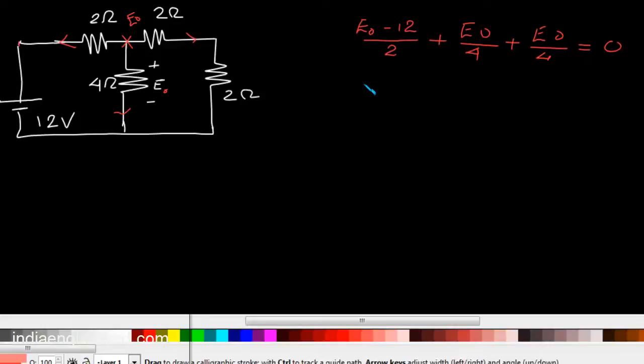From this we have E0 times (1/2 plus 1/4 plus 1/4) equal to 6. That means E0 equals 6 volts.